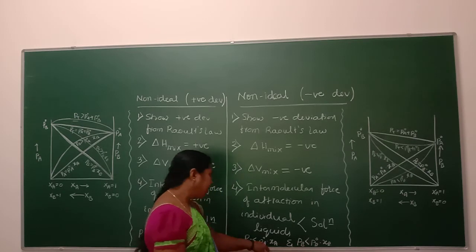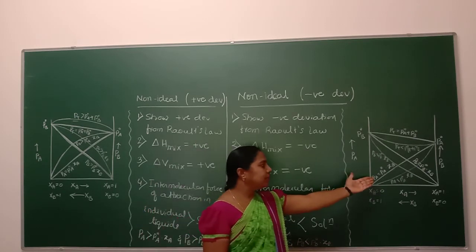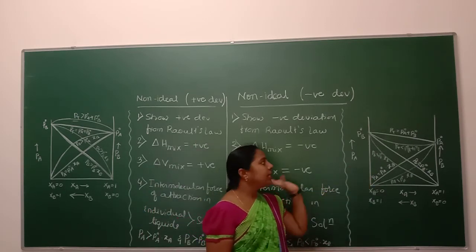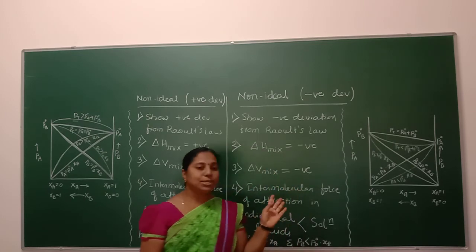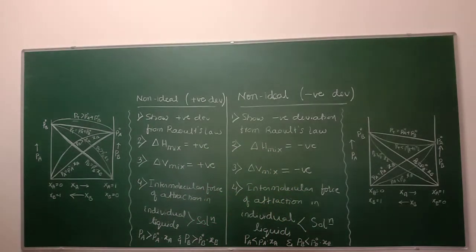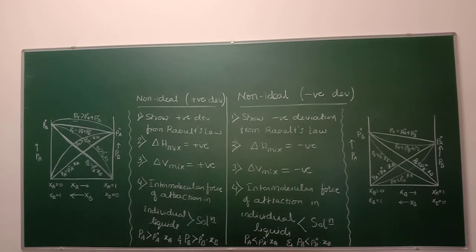Based on these two conditions, we represent the graph for a non-ideal solution with negative deviation. If a solution shows ideal behavior, we get a straight line through the origin. If a solution shows positive deviation from Raoult's law, we get a positively deviated curve, and if a solution shows negative deviation from Raoult's law, we get negatively deviated curves.